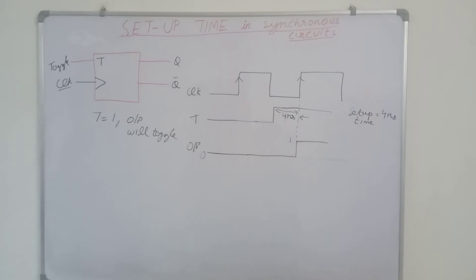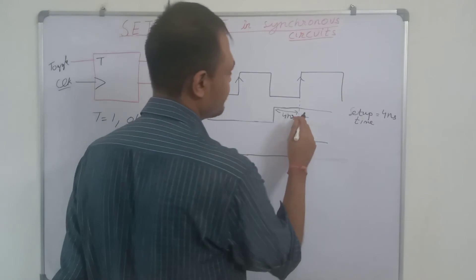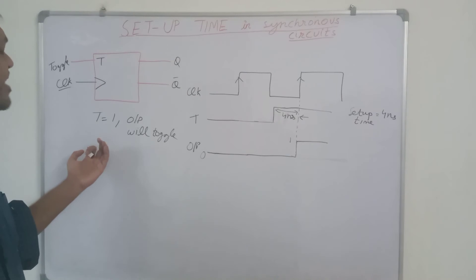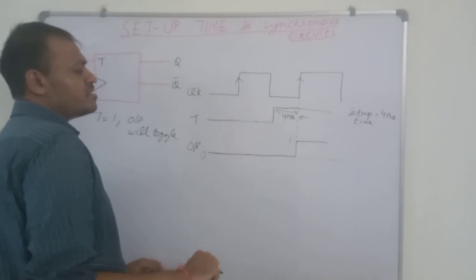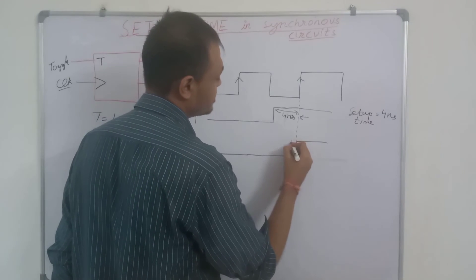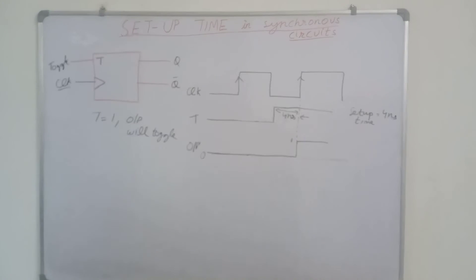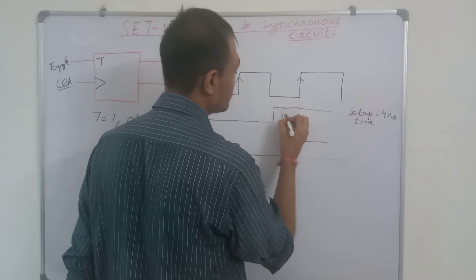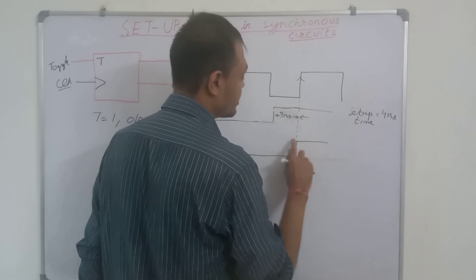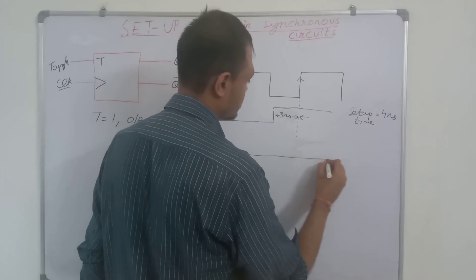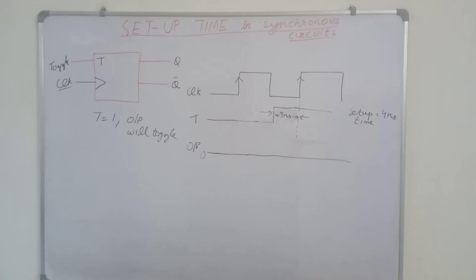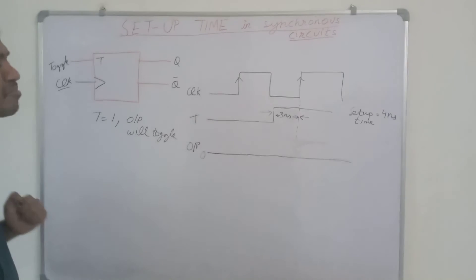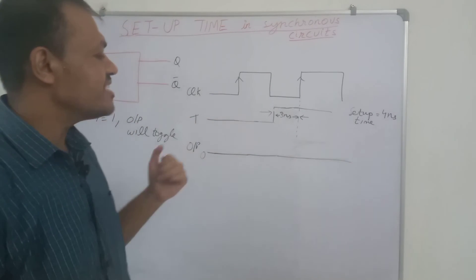This is a very simple concept: the input must be stable for the minimum time for which the input must be stable. The synchronous input must be stable before the application of the clock pulse. If the input is not stable before the setup time, then it will not be recognized as a stable input. As in the previous example, it got stable 3 nanoseconds before — if it was only 3 nanoseconds, then the output will not change. Because setup time is the minimum time for which the input must get stable to be registered as a stable input.